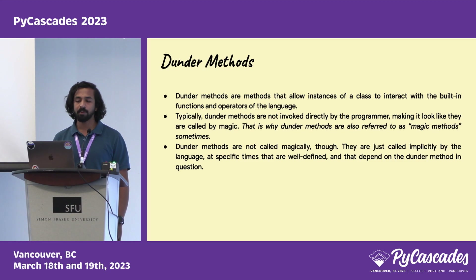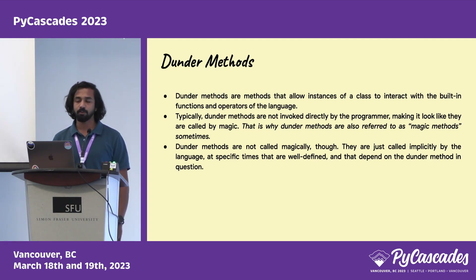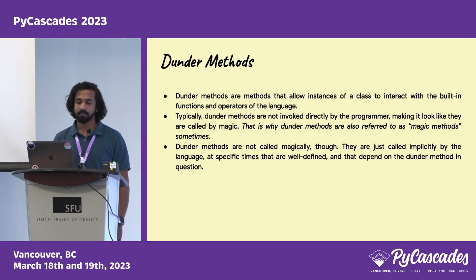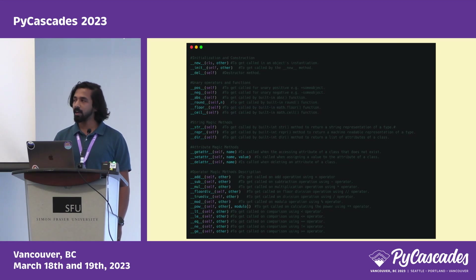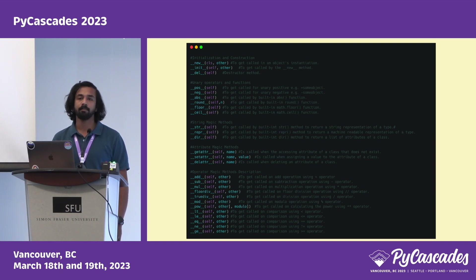Dunder methods are named because they start and end with double underscores. They are also called magic methods because it appears as though they are called by magic, but they are actually called implicitly by the language at specific, well-defined times. For example, the __sub__ dunder is invoked when we use the subtraction syntax like A minus B.